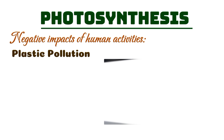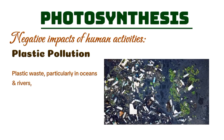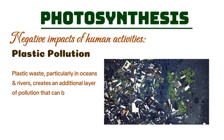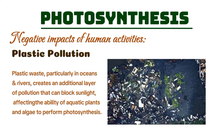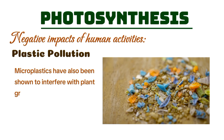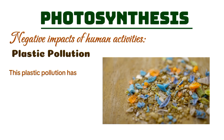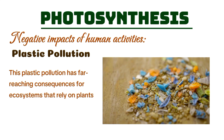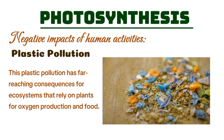Plastic waste, particularly in oceans and rivers, creates an additional layer of pollution that can block sunlight, affecting the ability of aquatic plants and algae to perform photosynthesis. Microplastics have also been shown to interfere with plant growth by altering soil and water chemistry. This plastic pollution has far-reaching consequences for ecosystems that rely on plants for oxygen production and food.